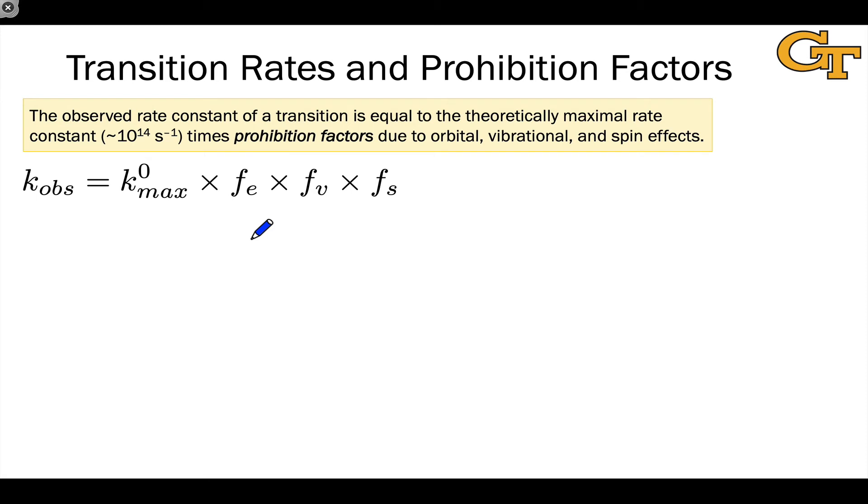In thinking about transitions between quantum states, there is a theoretical maximum rate to a transition for two states that are extremely similar - the probability of transition is very high. But the differences between the initial and final states introduce what we call prohibition factors. These F values are generally less than one and decrease the observed rate constant of a transition relative to our theoretical maximum. Because the wave functions are separable - electronic, vibrational, and spin - these prohibition factors are also separable. There's an electronic one, a vibrational one, and a spin one.